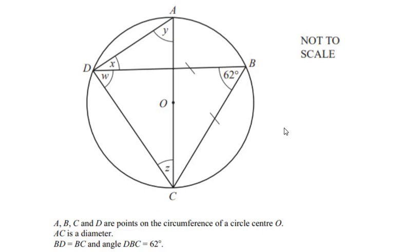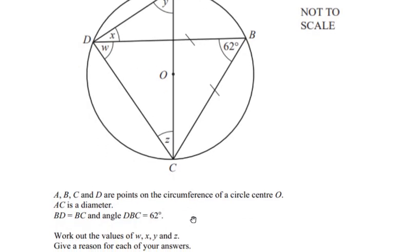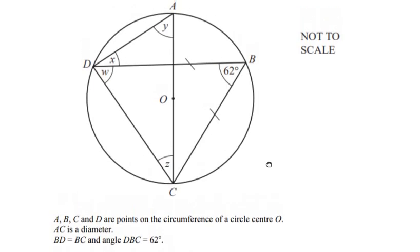Welcome to this video where we solve an example on circle theorems. Points A, B, C, and D are on the circumference of a circle with center O. AC is a diameter, sides BD and BC are equal, and angle DBC is given as 62 degrees. We need to find the values of W, X, Y, and Z and give a geometrical reason for each answer.